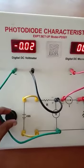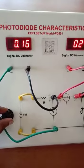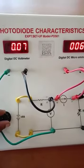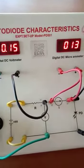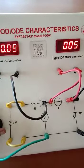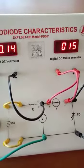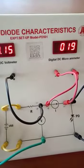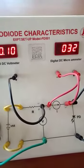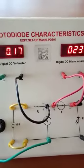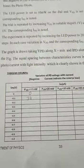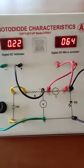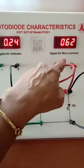Vary this knob — if you vary this, the voltage also increases. For 0.1 V, the voltmeter reads 0.1 V and the corresponding microammeter reading is 32 microamps. Write it as 32. Next, make it 0.2 V and note down the corresponding microammeter reading — for 0.2 V the value is 62.